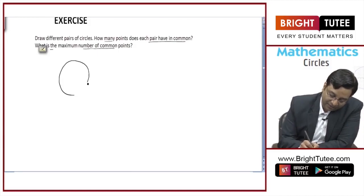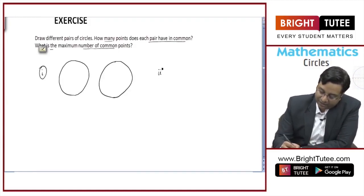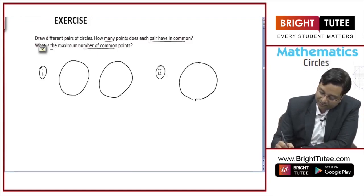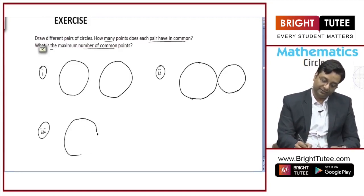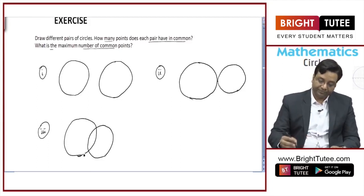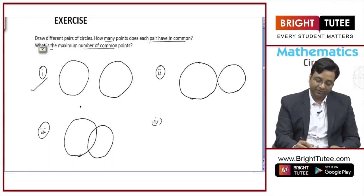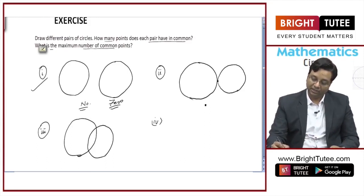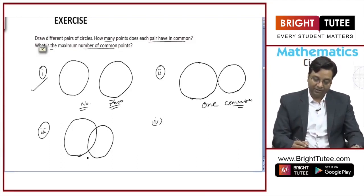Let us consider the cases. This is one circle and this is another circle — that can be one case. There can be another case where one circle and another circle do not intersect. And there can be a third case where they intersect each other. In case one, there are zero common points. In case two, there is only one common point — this is where two circles touch each other.